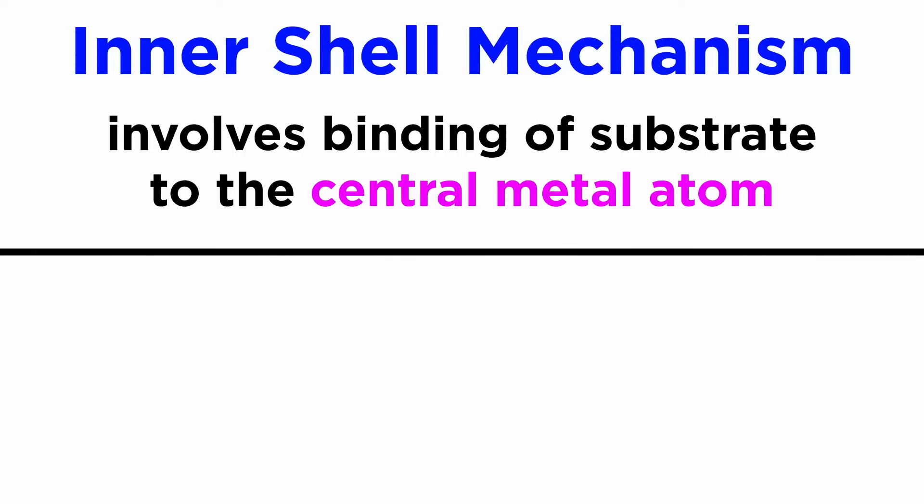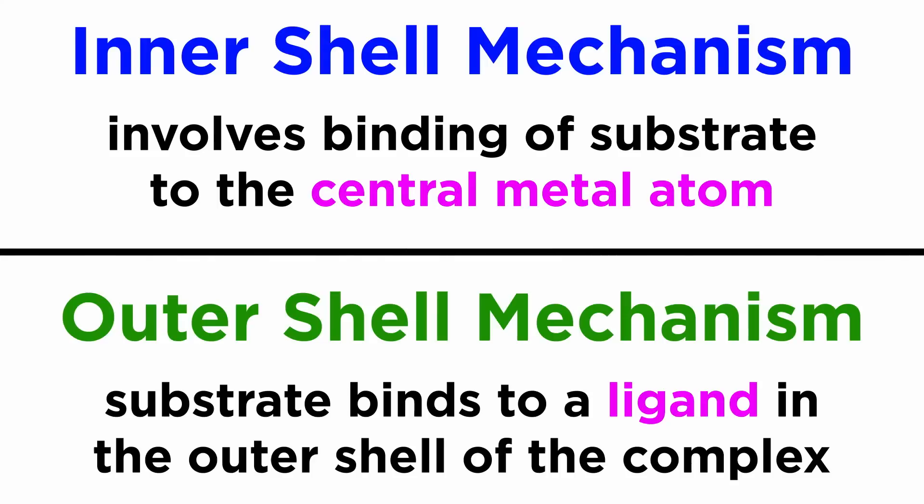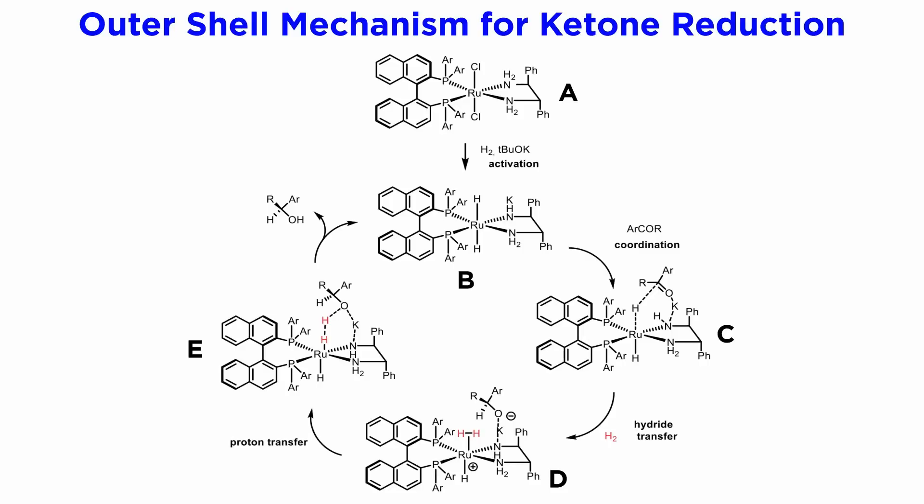An inner shell mechanism involves binding of the substrate to the central metal atom in some steps of the catalytic cycle. An outer shell mechanism, on the other hand, does not involve binding of the substrate to the metal center itself, but only to its outer shell — which means the ligands. Let us see how this complex reaction occurs.